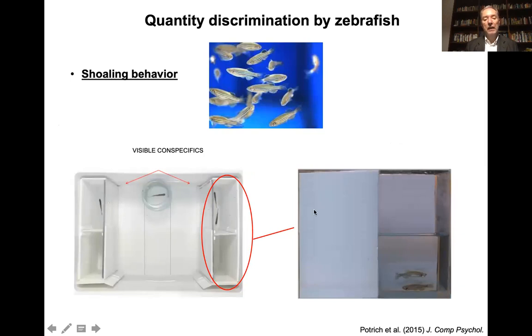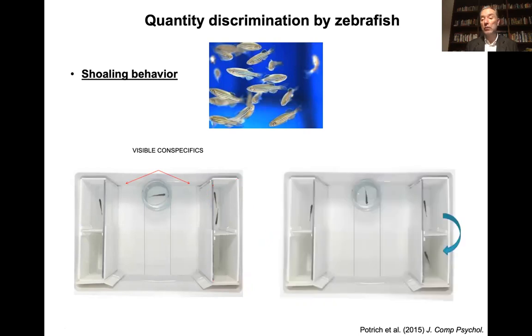Say one conspecific and two conspecifics, and then with mobile partitions, one or more fish in one group are removed so they are no longer visible. And the amount of stimulation at this point is exactly the same. In this case it's one-one, whereas previously it was two versus one.